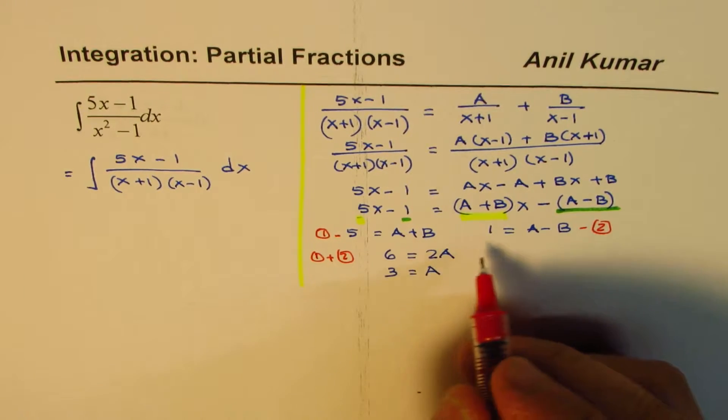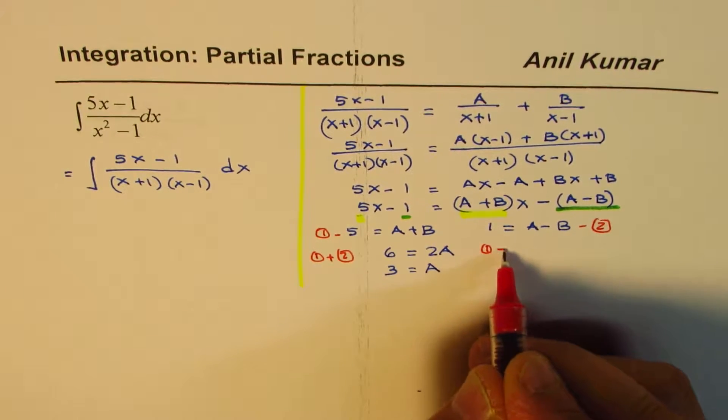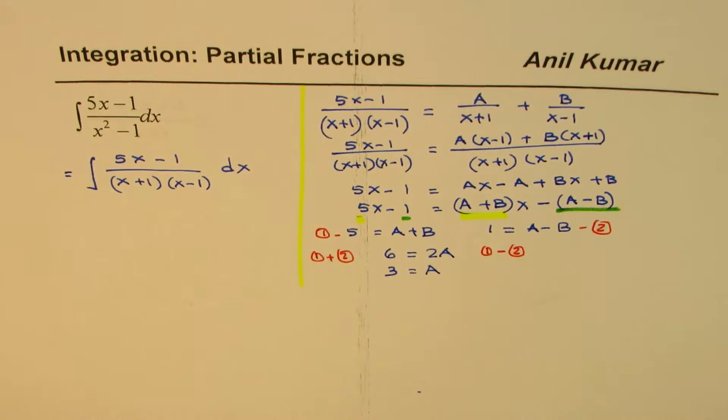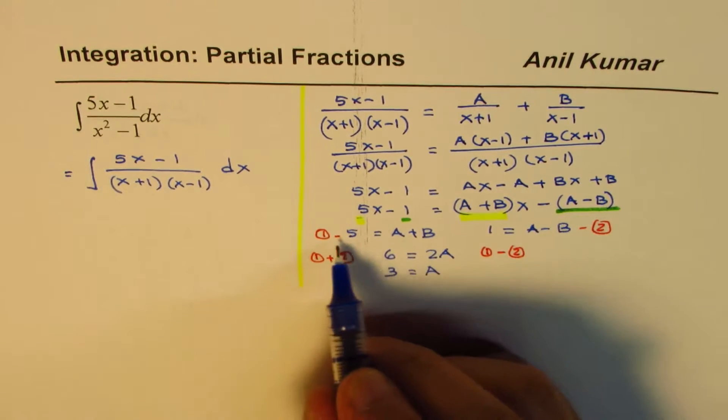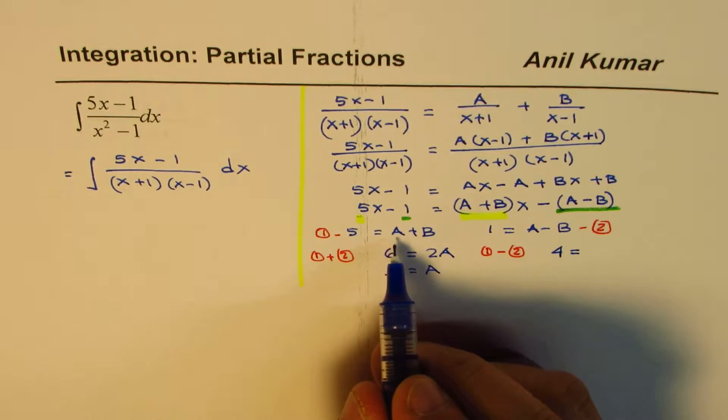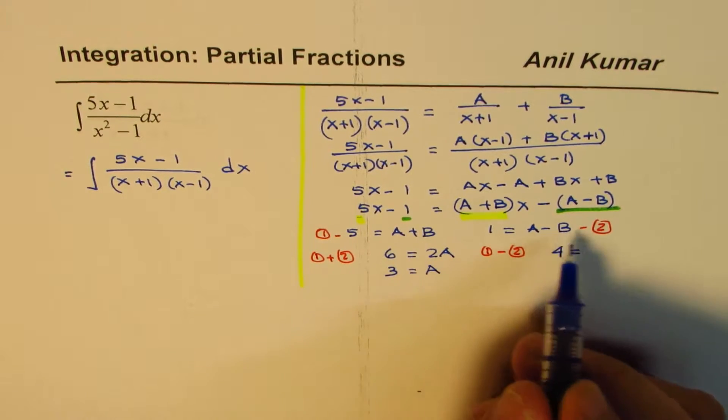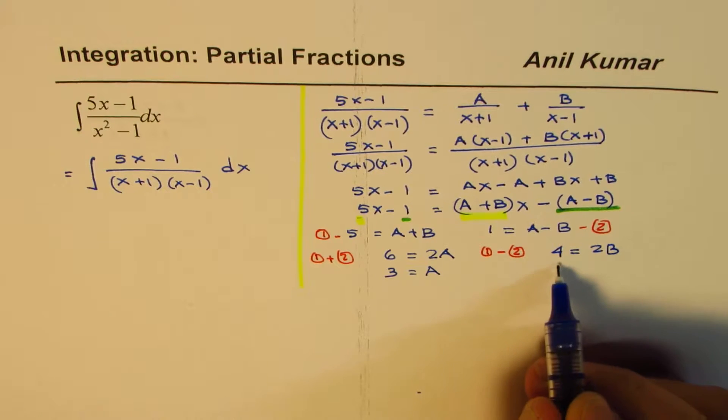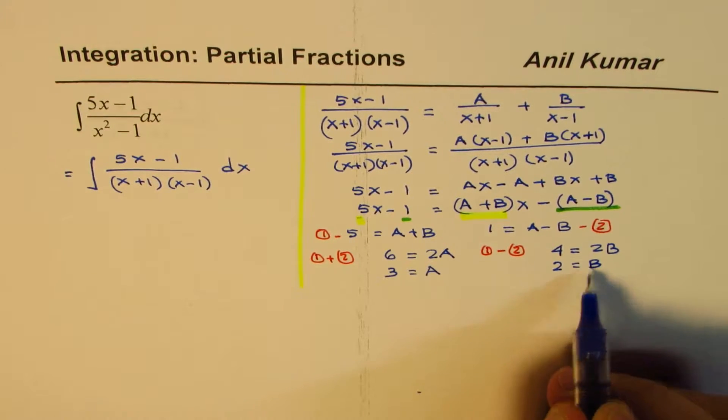If I subtract equations, that is equation 1 minus 2, in that case, 5 minus 1 is 4, and A minus A is 0, B minus minus B is 2B. And so I get B as equals to 2.